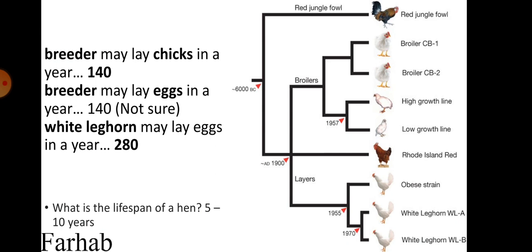A breeder hen lays 140 chicks and eggs per year, whereas the White Leghorn lays 280 eggs per year. The lifespan of a hen is 5 to 10 years — this was not asked in the question but is good to know.